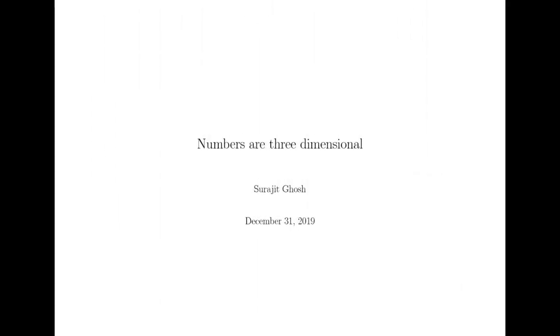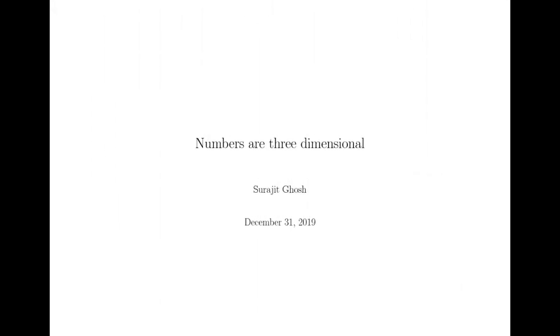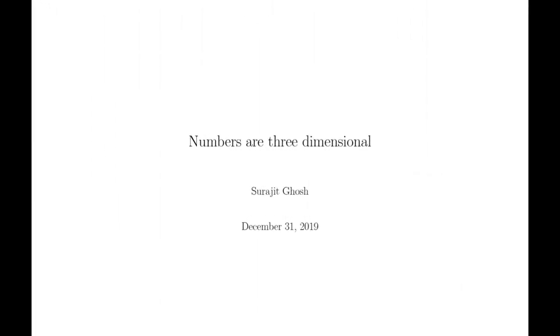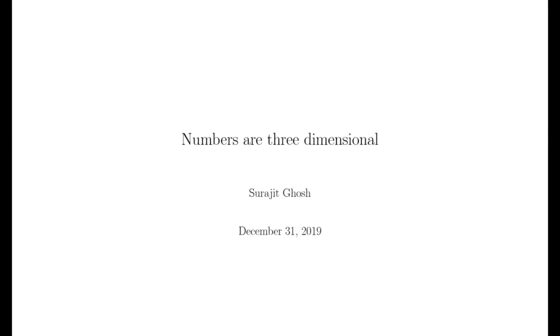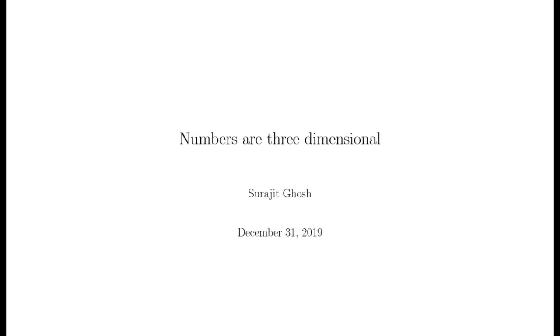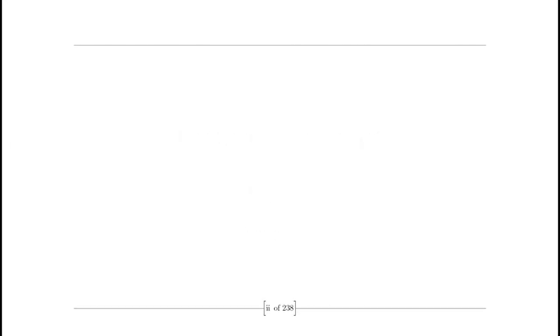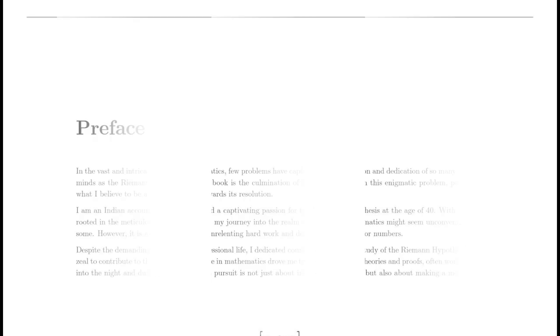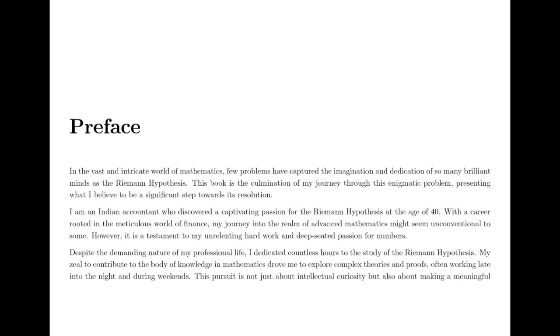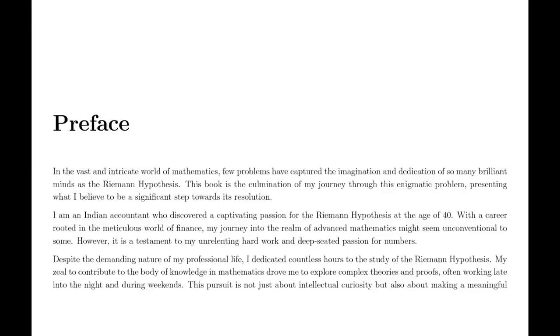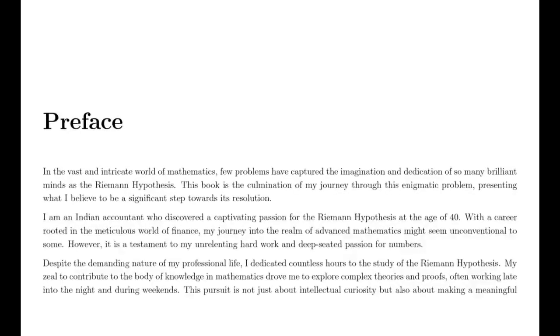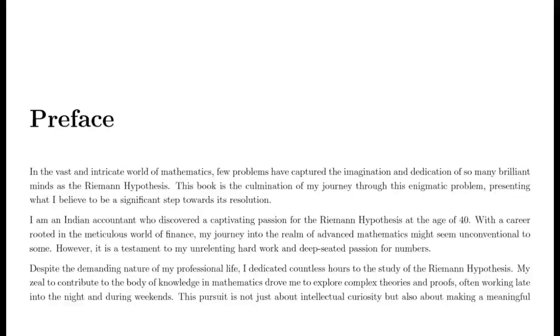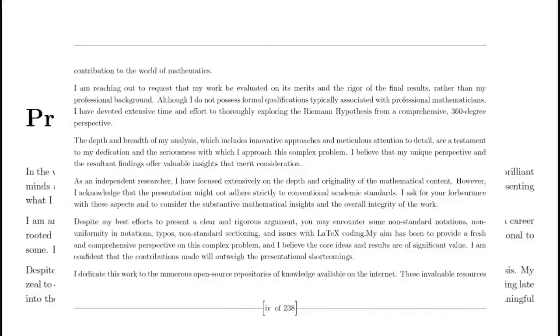Namaste. Once upon a time, in the heart of the 18th century, a brilliant mathematician named Leonard Euler ventured into the mysterious world of numbers. Euler was captivated by the idea of understanding the distribution of prime numbers, those elusive building blocks of arithmetic. In his exploration, he stumbled upon a peculiar series — the infinite sum of the reciprocals of the natural numbers raised to a power. This was the dawn of what would later be known as the Riemann zeta function.